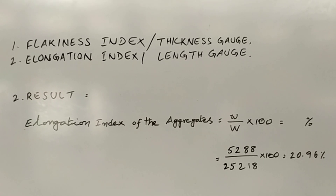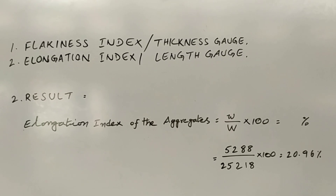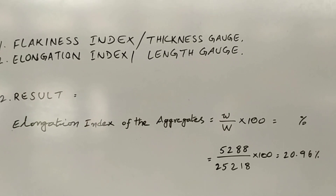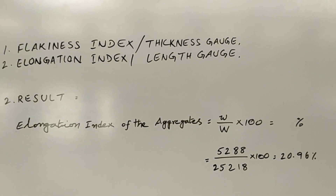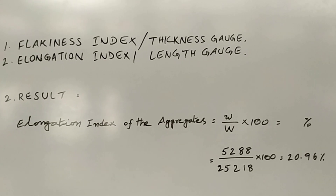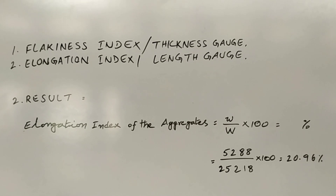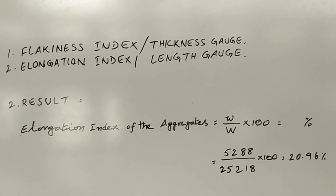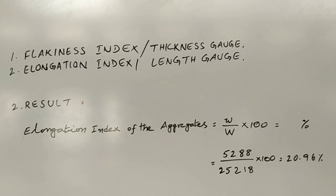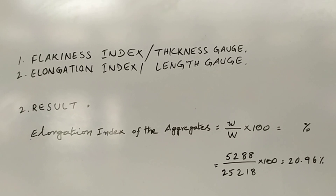The calculation result shows the elongation index of the aggregates: the retained material of 5,288 grams divided by the total weight, multiplied by 100, gives an elongation index of 20.96%. These are the two tests conducted regarding the shape test — flakiness index and elongation index — to determine the shape of the aggregate particles.